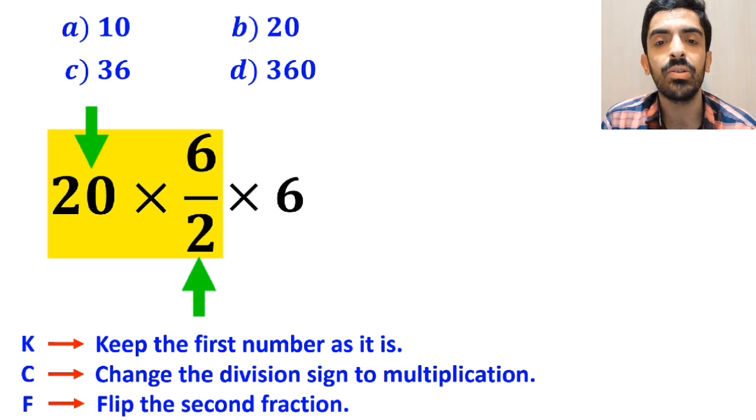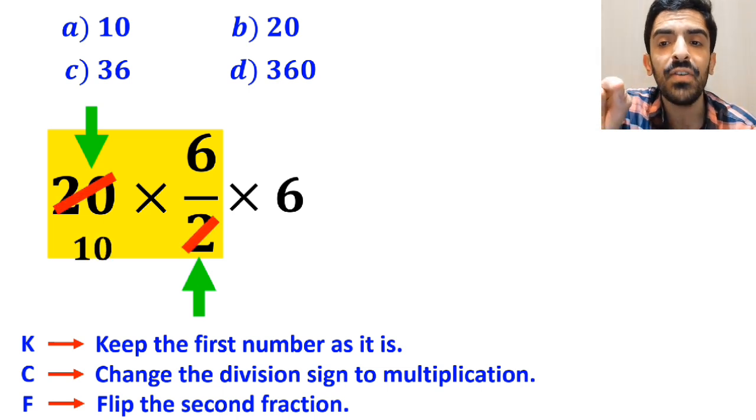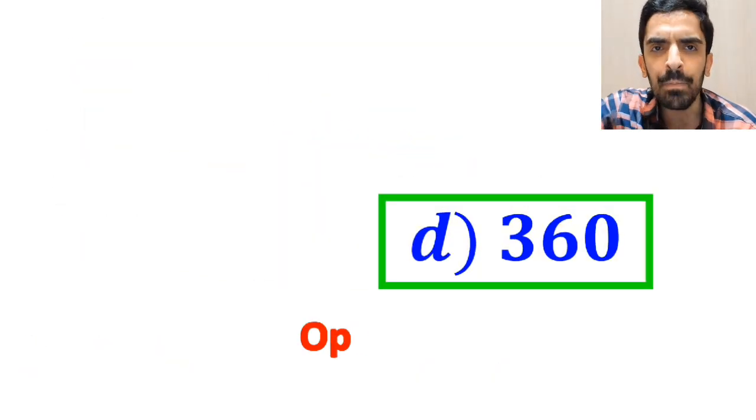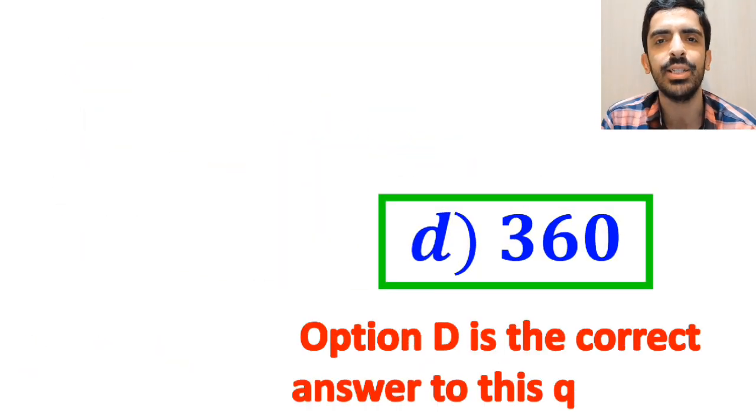Alright, as you can see on the screen, the number 20 simplifies with the 2 in the denominator, and instead of this expression, we can write 60 times 6, which ultimately gives us the answer 360. Therefore, option D is the correct answer to this question.